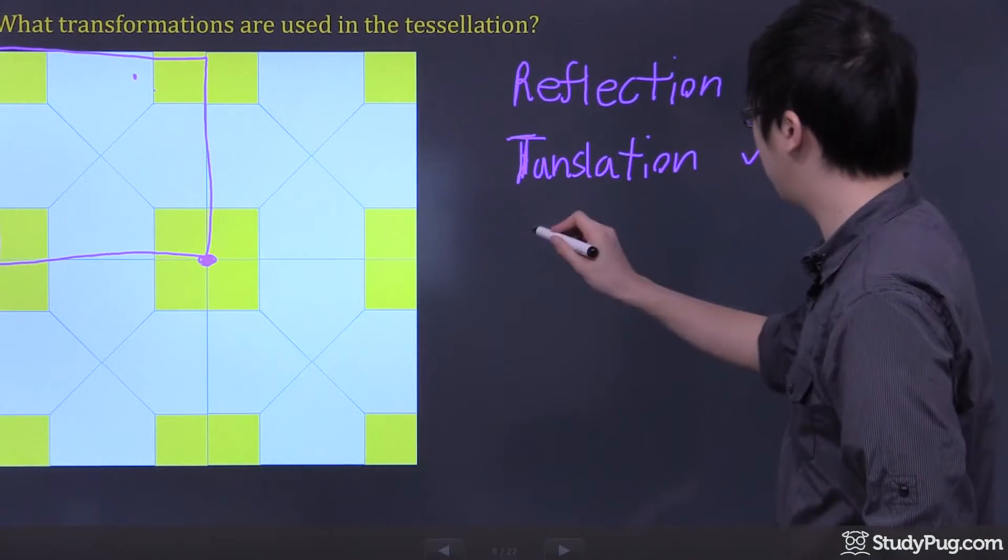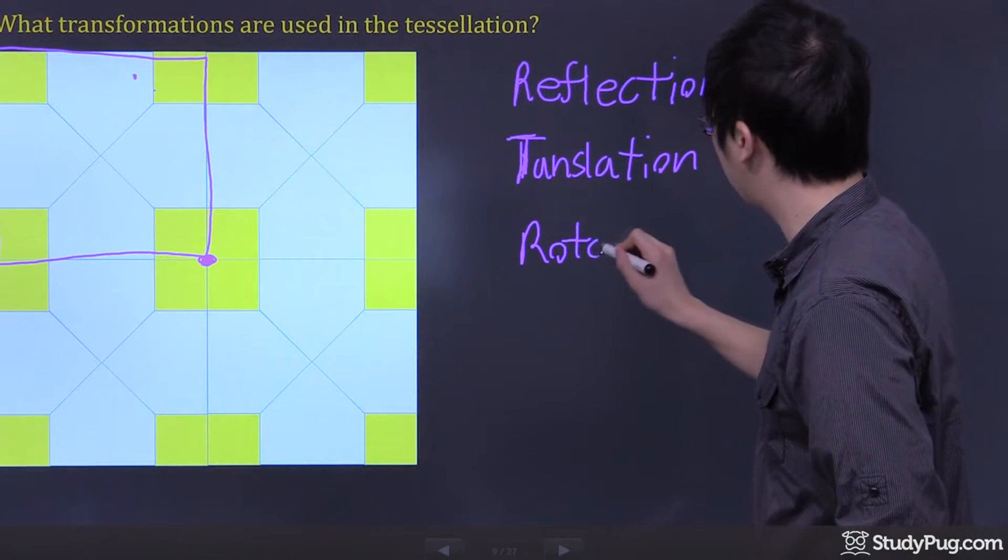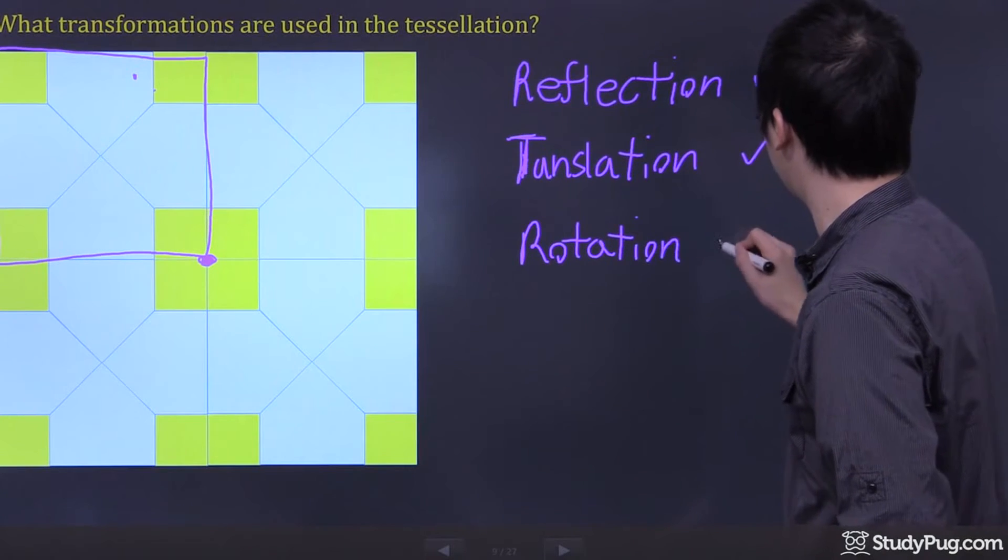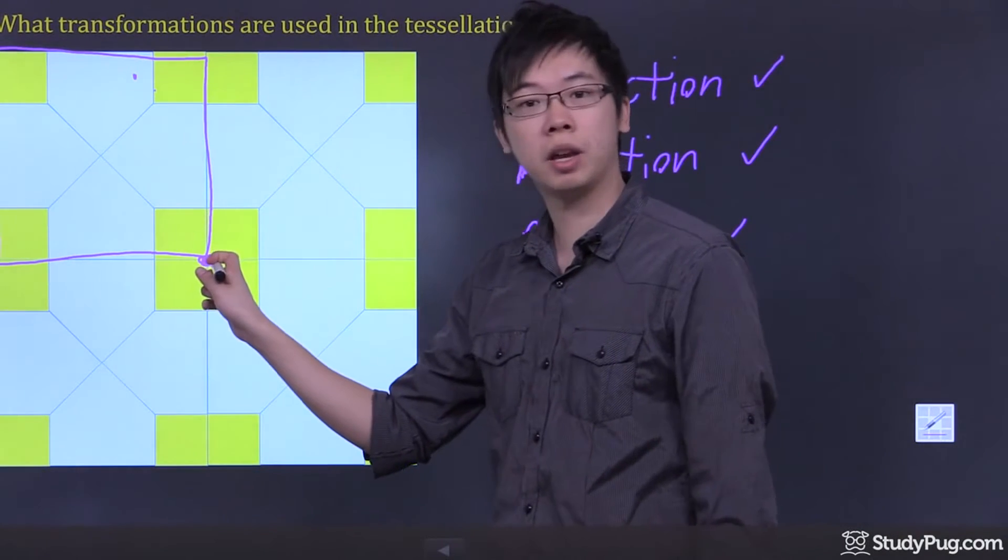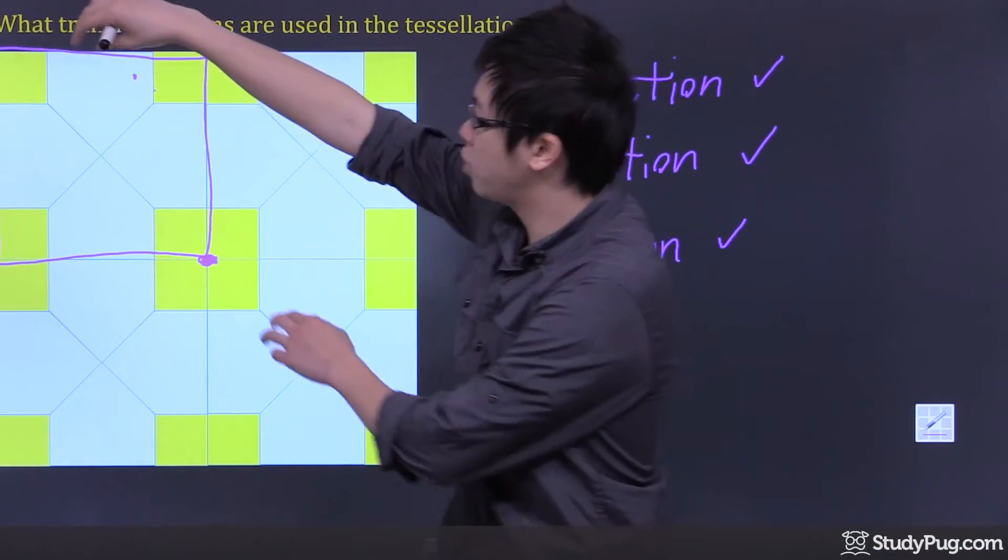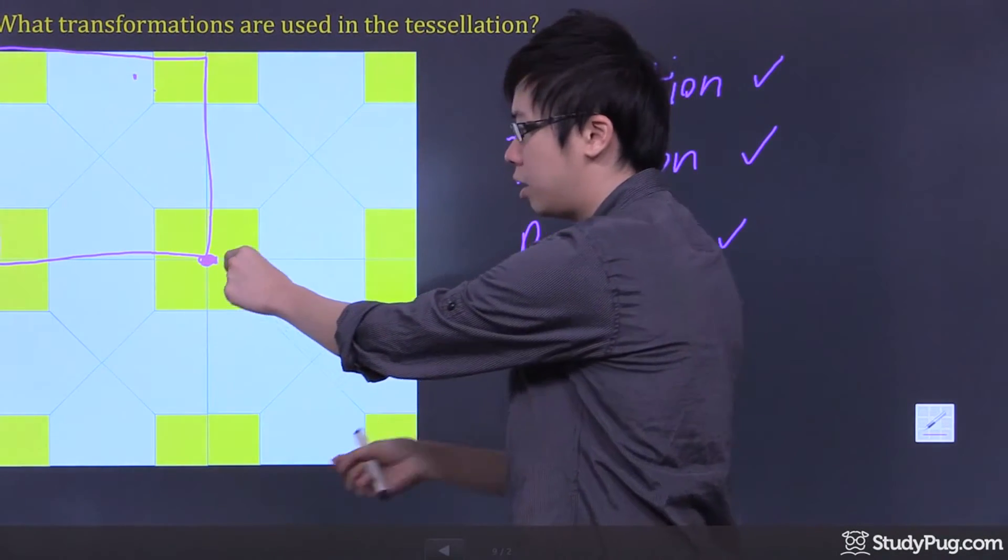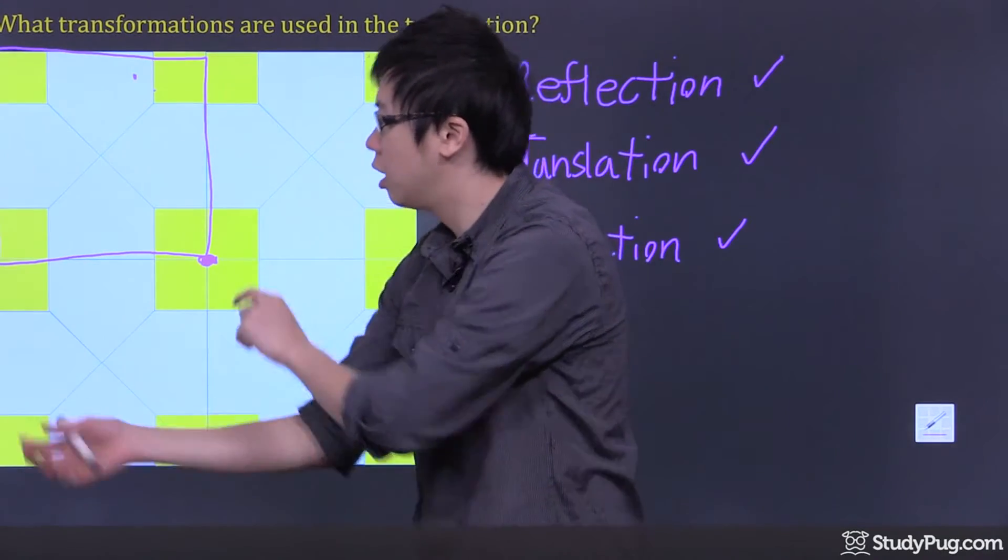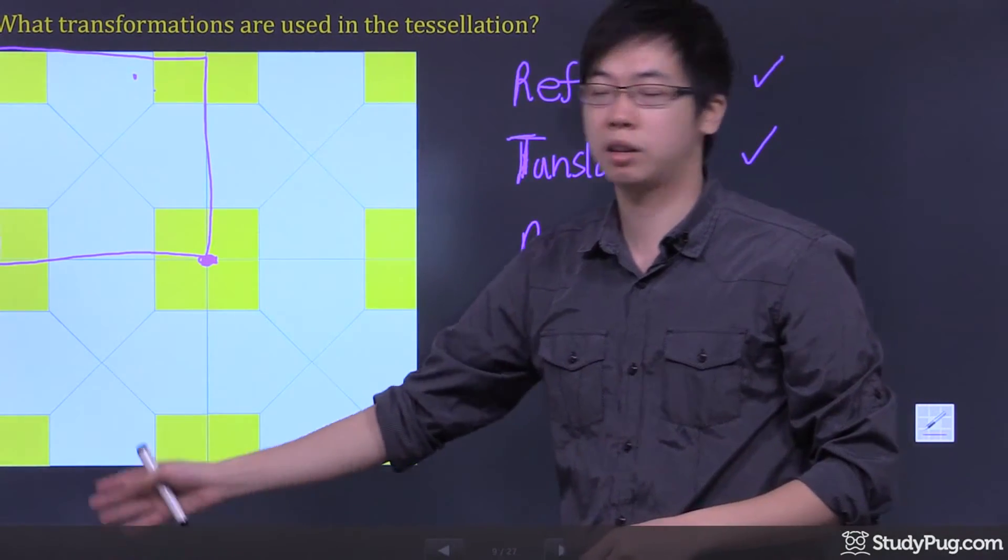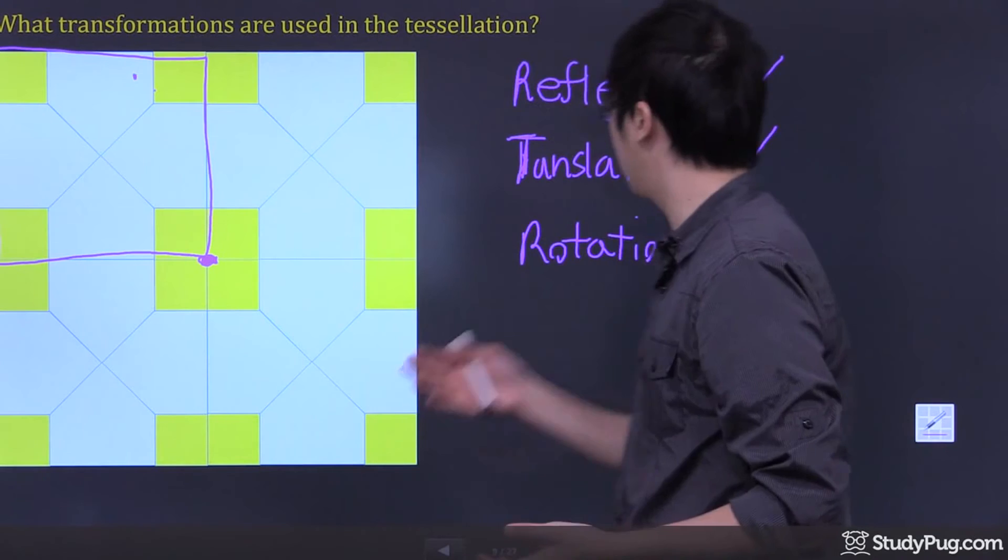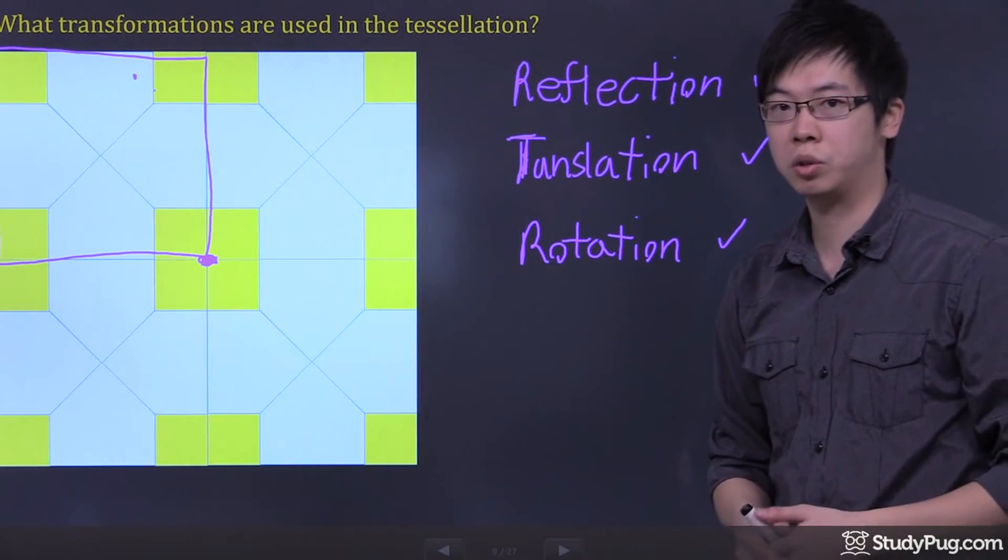And the last one is the rotation will work too. See, what we can do is, again, we can use this as a vertex right here. And imagine if I can just rotate it 90 degrees this way, and then rotate again 90 degrees this way, and rotate 90 degrees, you get yourself the four exact same figures. So the rotation also works just as well.